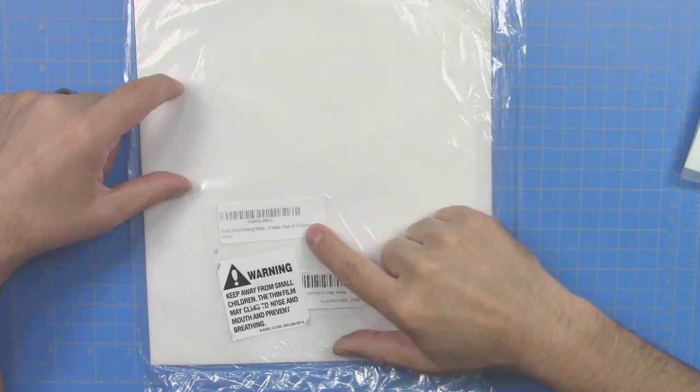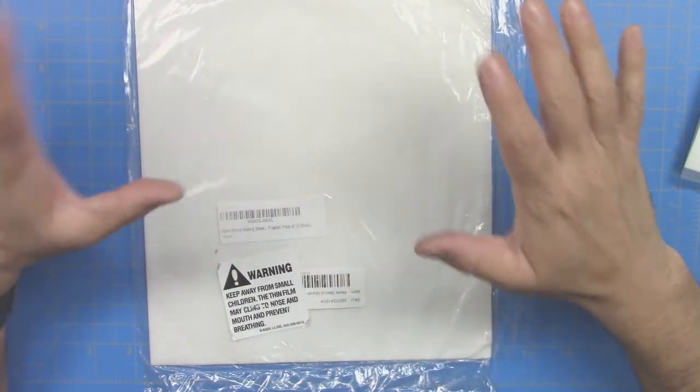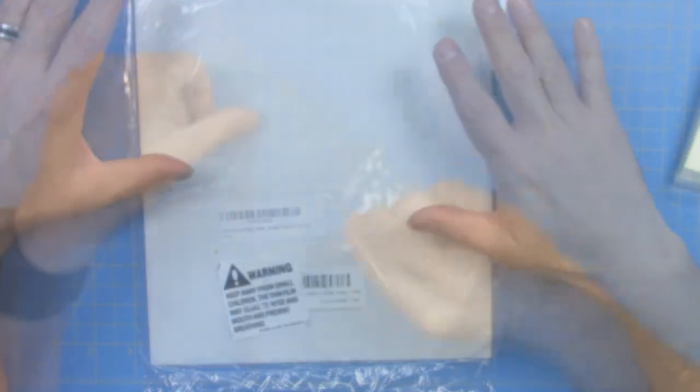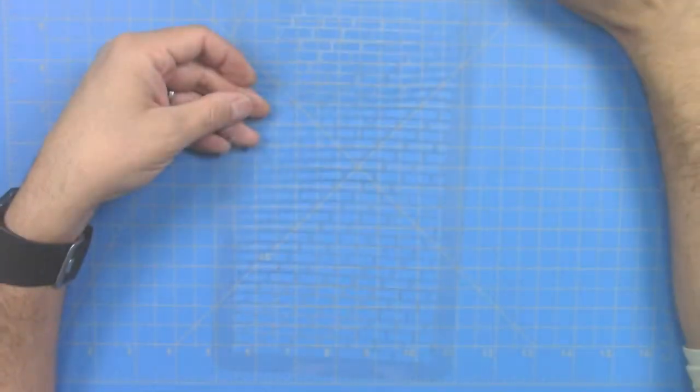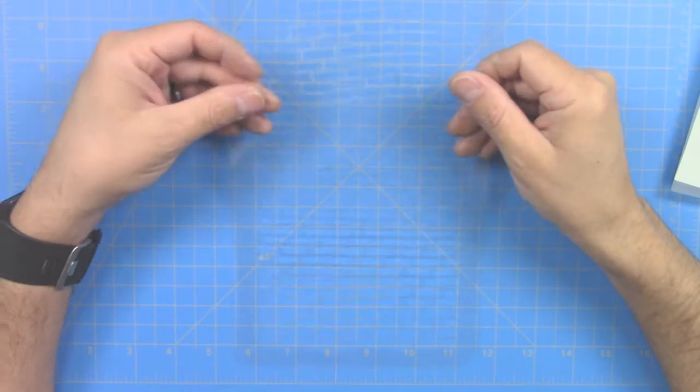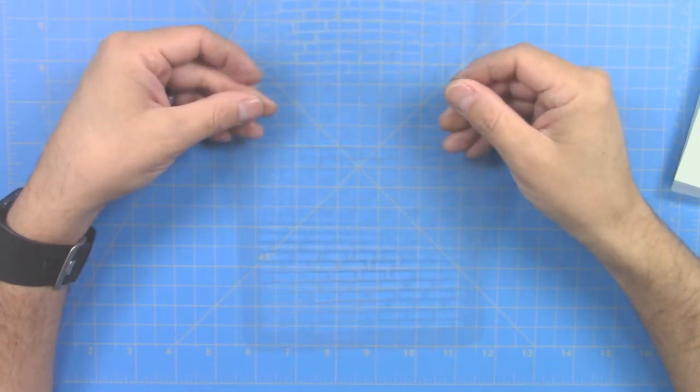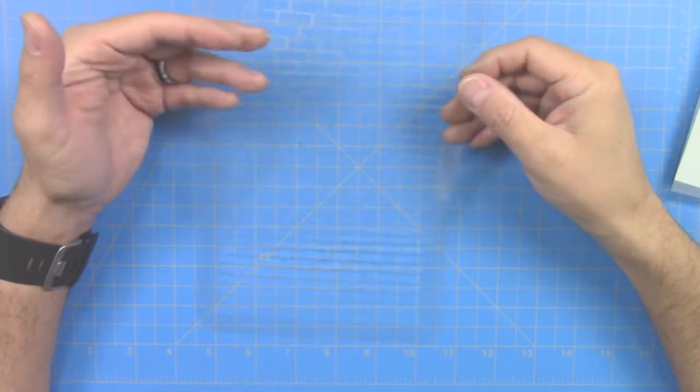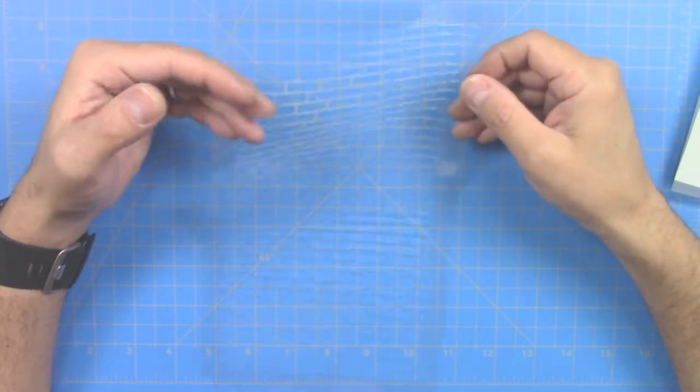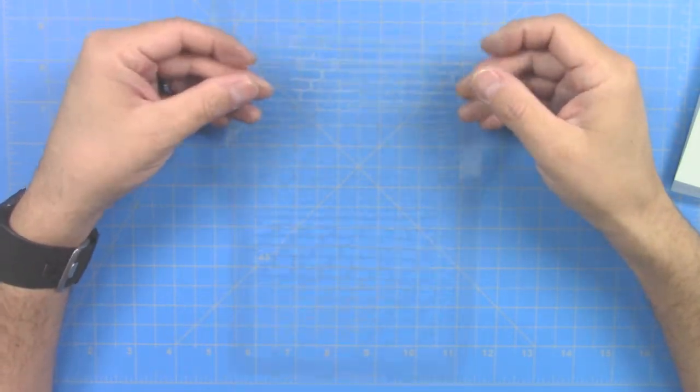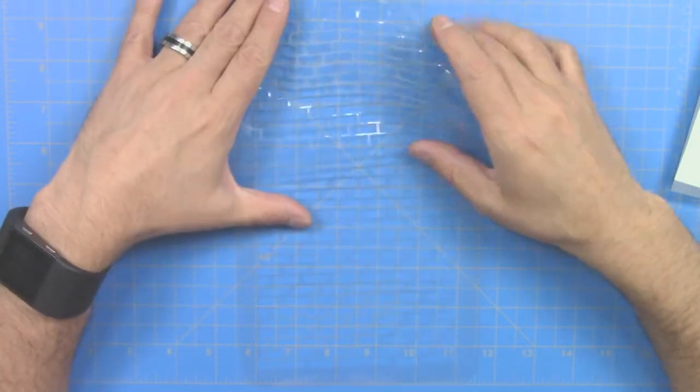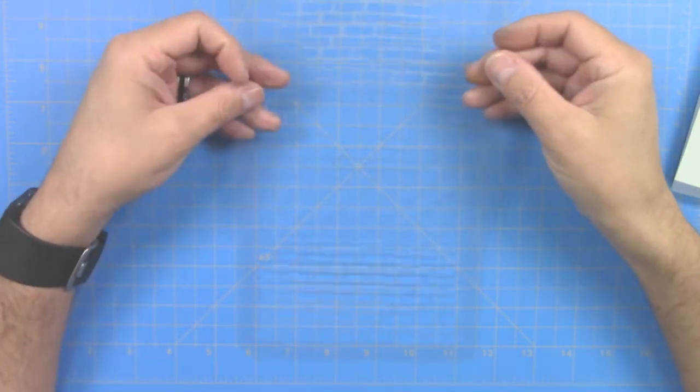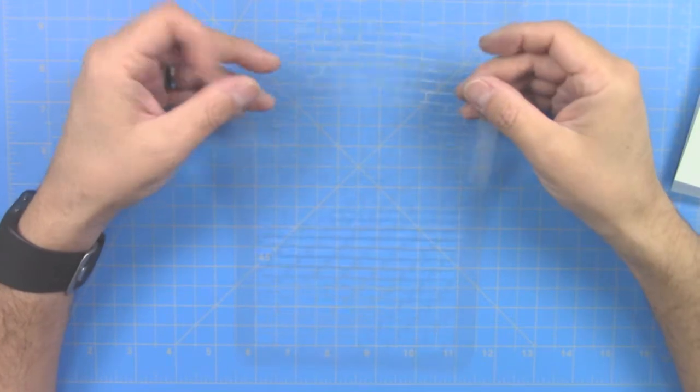They cut very well on the Cricut Explorer also. I only had to use a one pass 280 pressure with a fine tip blade on a standard grip mat. And this equals the transparency setting on your machine. Just go to the custom setting and select a custom material and that's transparency.